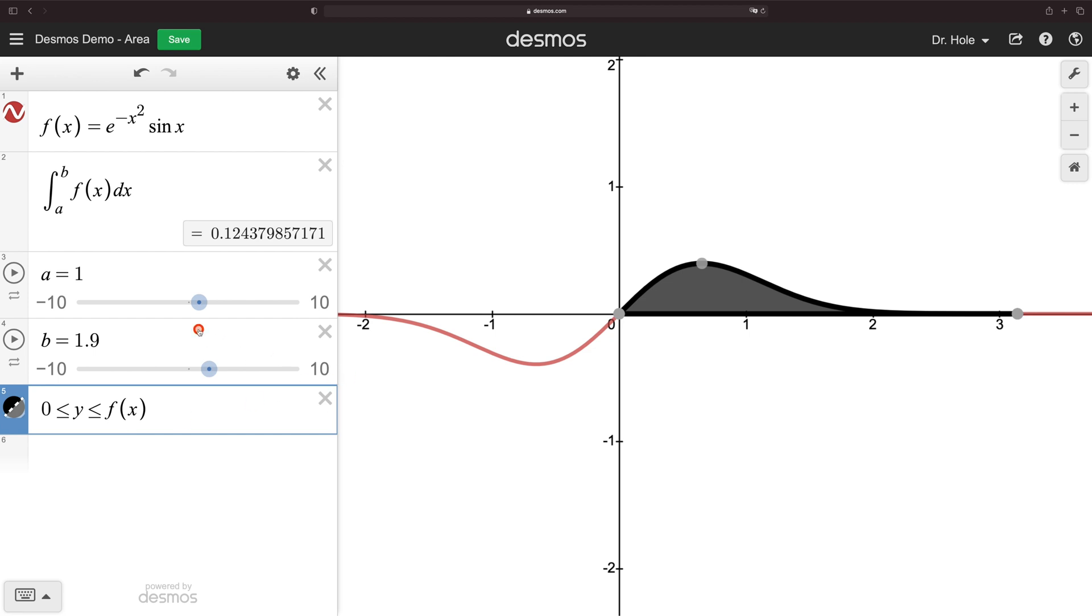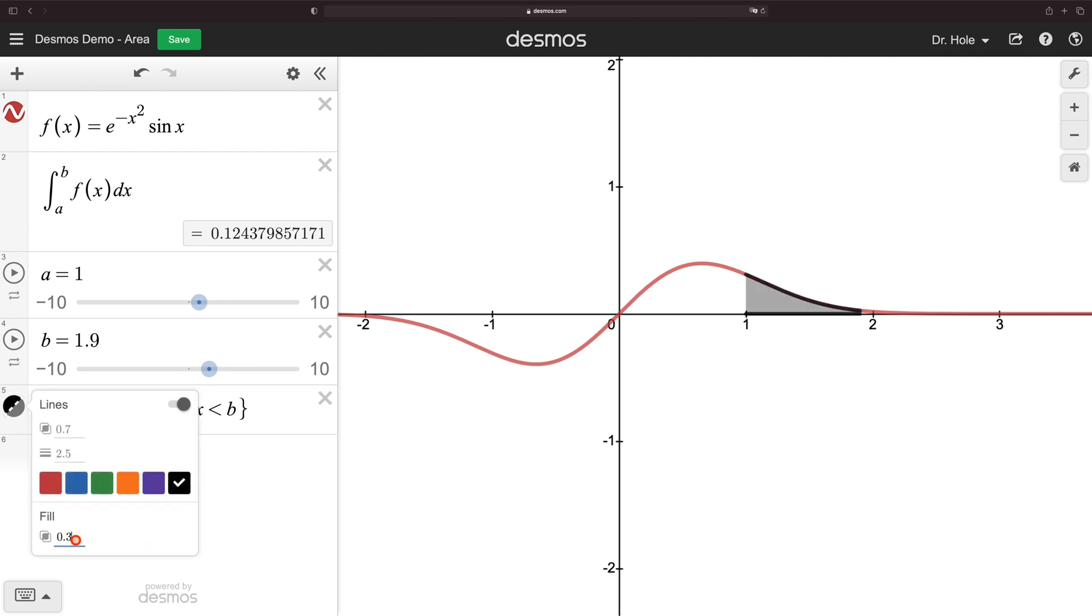We want to have it correspond with our definite integral. So we can put a restriction now on the x and we do that with the curly braces. We want x to be taken between a and b. And then we'll use the color gray. Let's bring down the opacity slightly. We can get rid of the lines, and then we have a nice little picture for a positive shading.